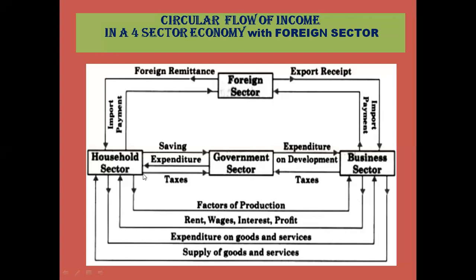Both households and firms pay taxes to the government sector. The government buys goods and services from firms in order to undertake the development process, so money flows from the government to the firms as expenditure on development. Similarly, the government also buys land and labor from households, and in return pays wages and rent to the households. This completes the household, government, and firm flows.